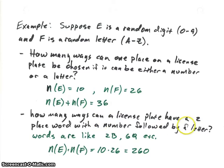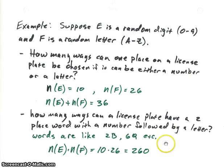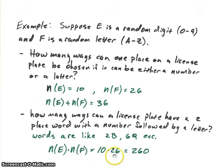Now let's look at a different license plate where we have two places. In this case, we're only allowing a number for the first element followed by a letter. So we're doing an experiment where we pick a number and then pick a letter randomly. This makes a product set, and the elements would be like 2B or 6Q and so on. The total number of possibilities would be the number of elements in E times the number of elements in F — 10 times 26 — which gives us 260.